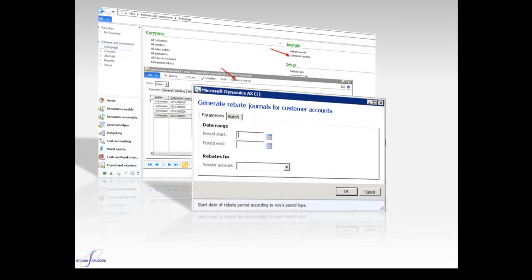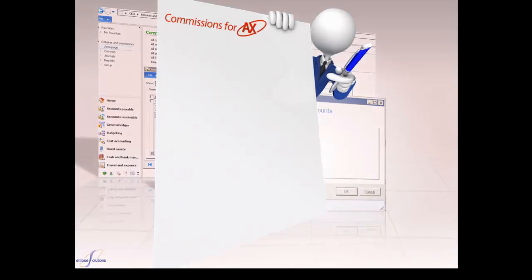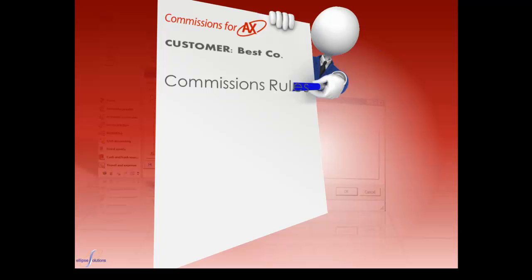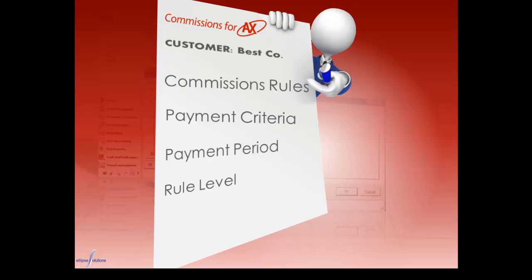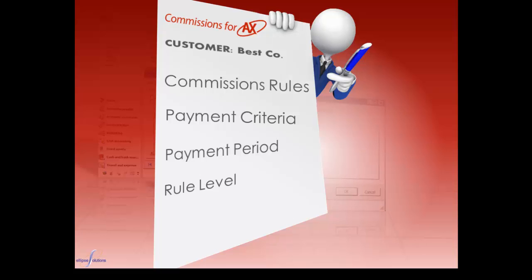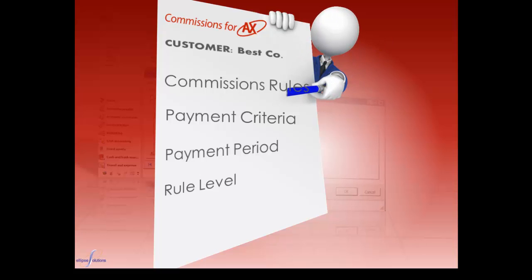Once the rules are established, journals are run at specific intervals to recognize and pay commissions according to the business requirements, such as upon business account or invoice. Each rule's payment criteria and period is set at the rule level and can be set to include or exclude discounts, freight, rebates, and miscellaneous charges.